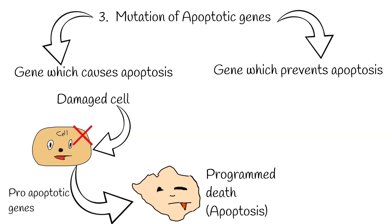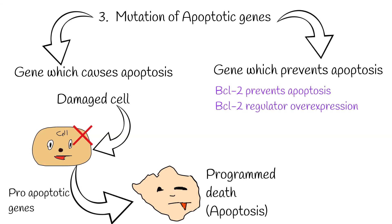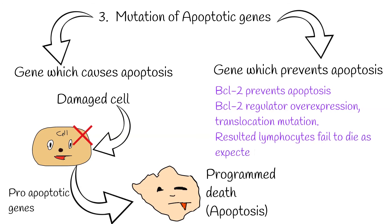But sometimes apoptotic genes are inactivated or prevented by other genes' overexpression. For example, normally BCL-2 prevents apoptosis — programmed cell death. In follicular lymphomas, BCL-2, a regulator of apoptosis, is overexpressed due to translocation mutation. The resulting lymphocytes fail to die as expected and instead produce a tumor.